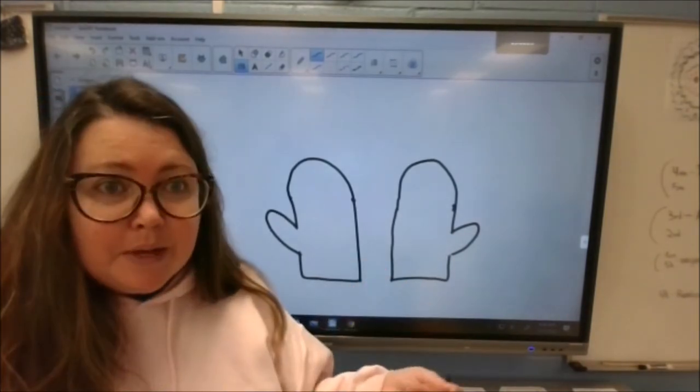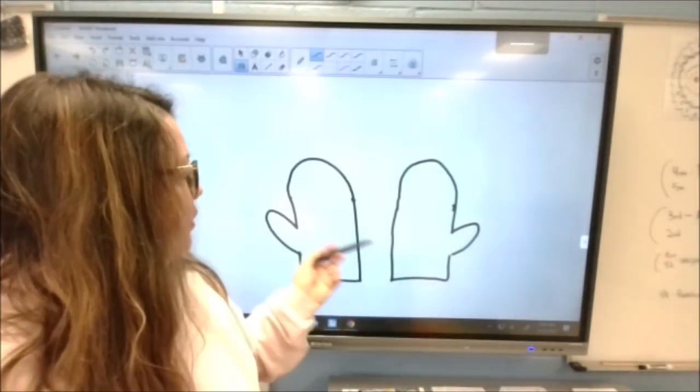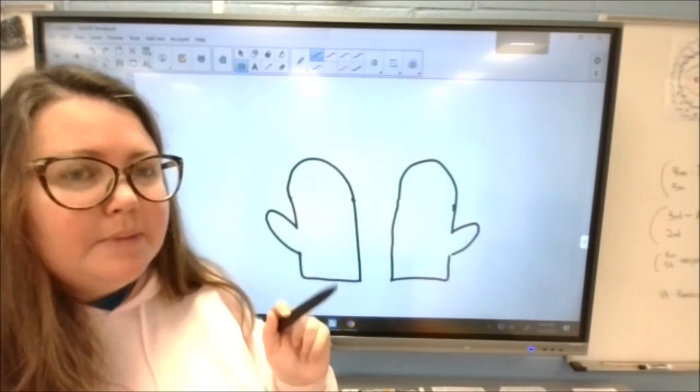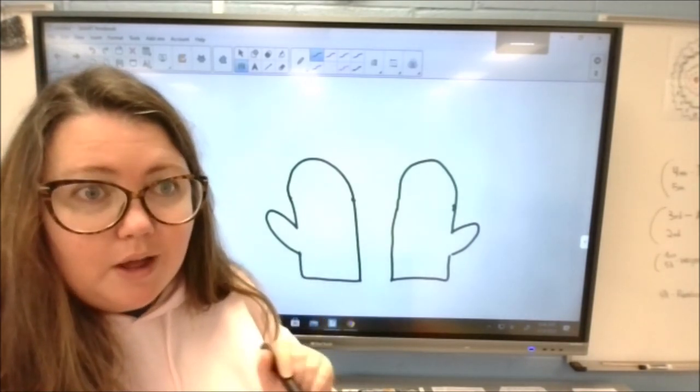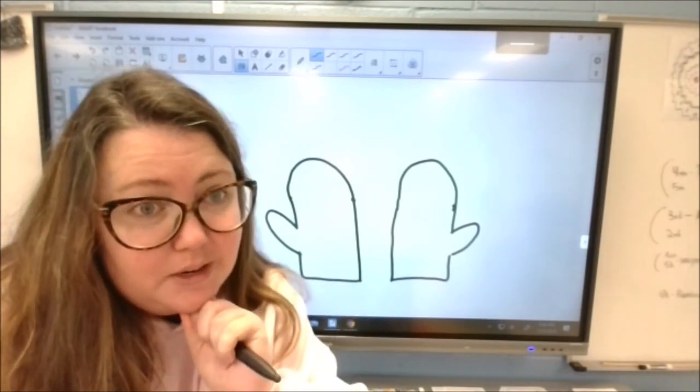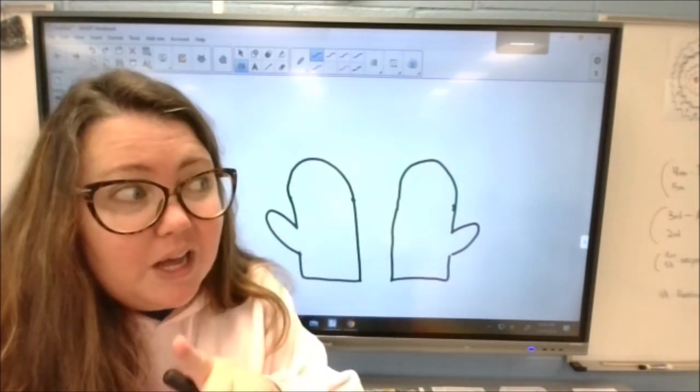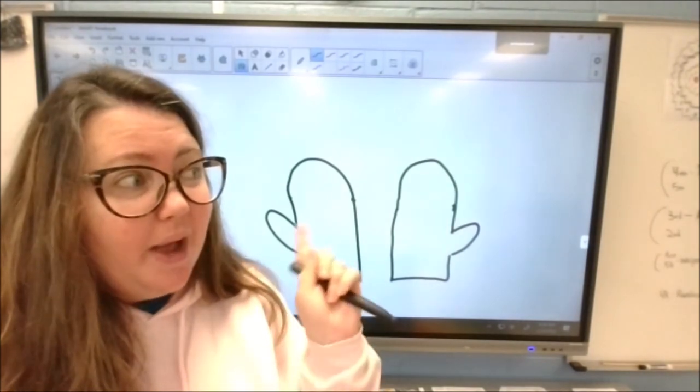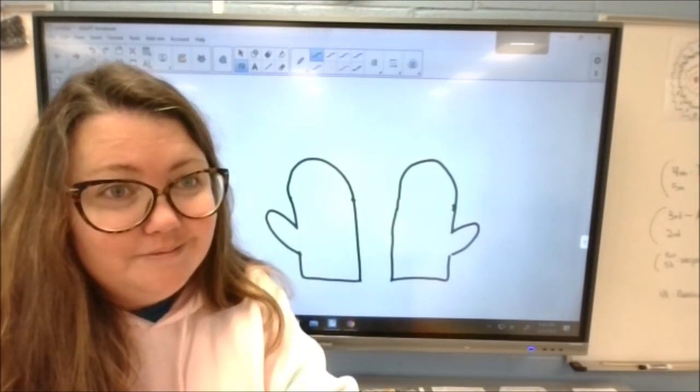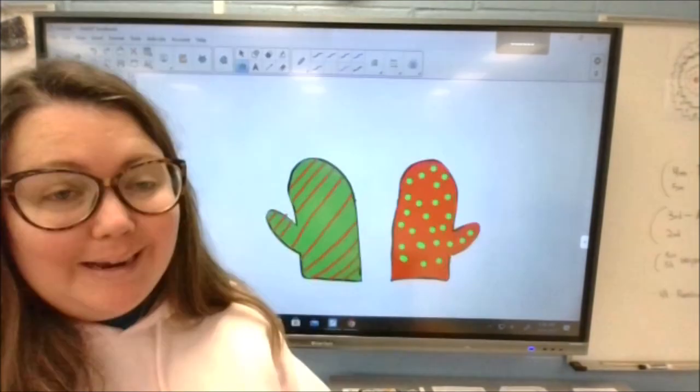And you're going to design your mittens however you want. If you want rainbow mittens, you could have rainbow mittens. If you want to have stars on your mittens, you can have stars on your mittens. Polka dot mittens. Whatever you want. I'm going to pause and I'm going to design mine and then I'm going to show you guys in a minute. While I'm pausing, you can go back and watch the pattern video if you forgot and you need a refresher.